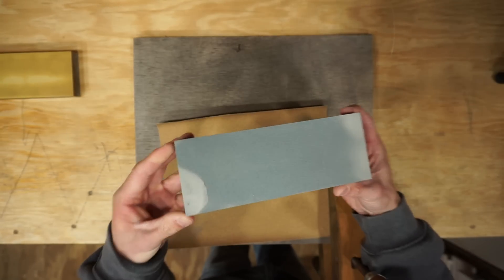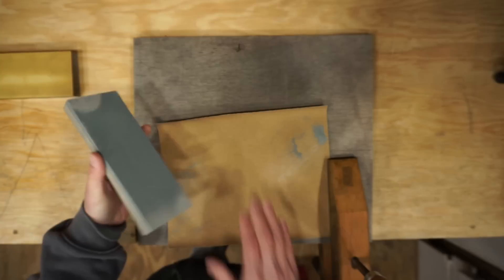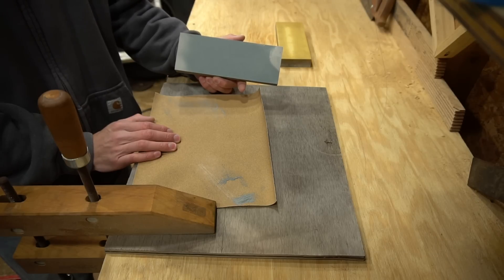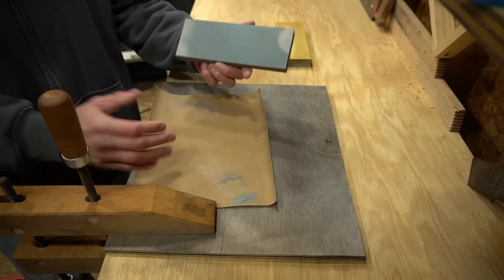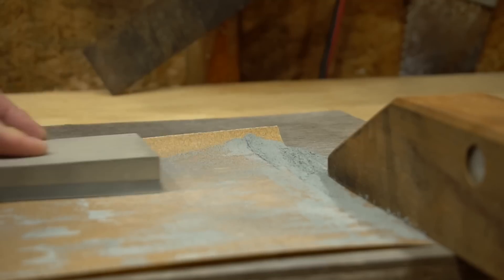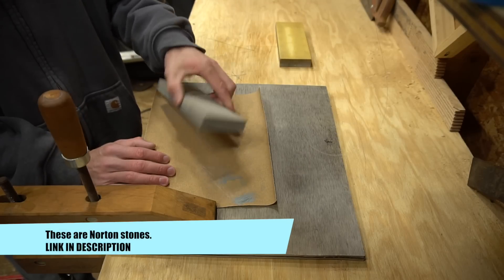So you can see where it's starting to rub the high spots. You can use water on this. I don't like to use water. I think it just makes things messy and I don't really think it speeds up the process or helps in any way, at least on these stones. Maybe other stones you do need water or something to carry the particulate away, but for these stones no water seems to work fine just on regular sandpaper.